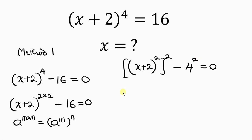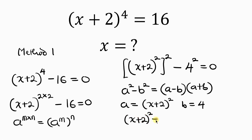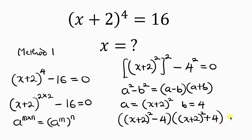Notice that we have a difference of two squares. The property of difference of two squares says a² − b² = (a − b)(a + b). Comparing, a is (x + 2)² and b is 4. So we express this as [(x + 2)² − 4] × [(x + 2)² + 4] = 0.